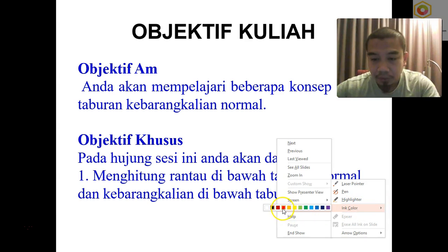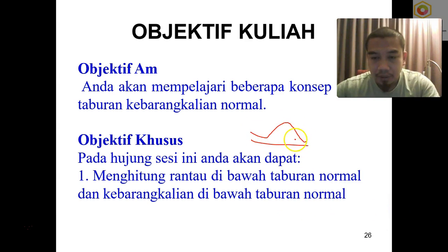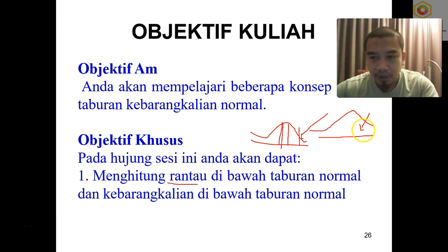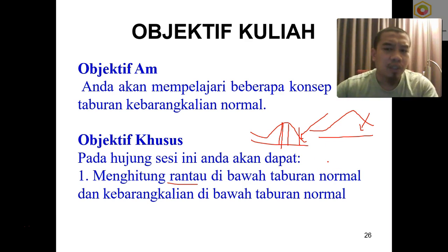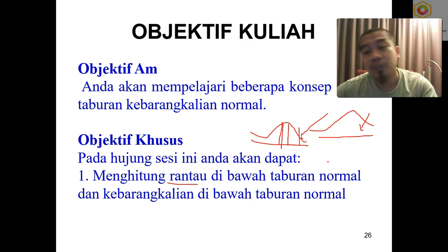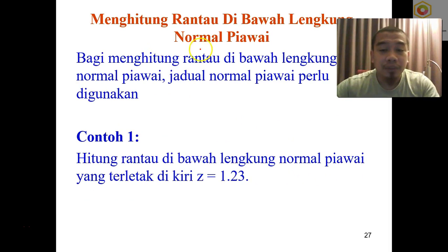We look at the normal tabulation of data based on our histogram, and we want to estimate the area under the curve. This area is associated with the z-score. All of the x values, the raw variables, have already been transformed into z-scores from the previous lecture. We need to understand how to calculate the area under the curve in the normal tabulation of data.